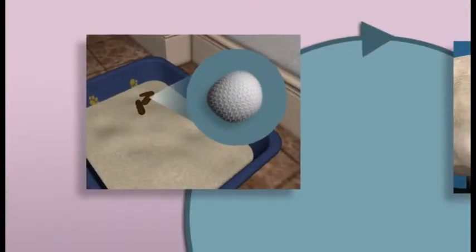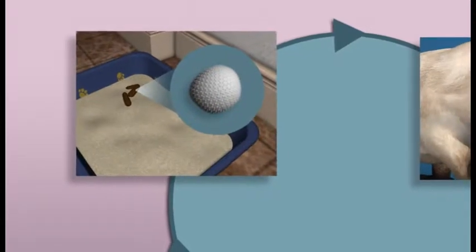Cats become infected with cryptosporidium by ingesting oocysts that are shed in the feces of an infected cat. These oocysts have a highly resistant wall which allows them to survive in the environment for long periods of time.